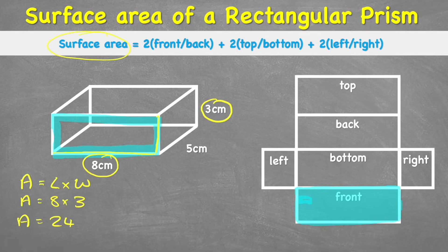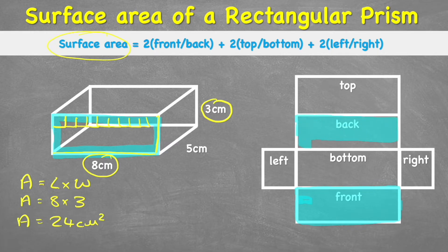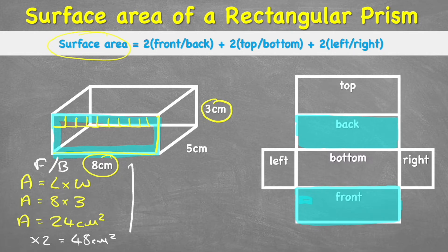Area equals 24 — but 24 what? When measuring area we are building up little squares to fill the shape, so we measure in centimeters squared. The front is 24 centimeters squared, and since the back is exactly the same, we multiply by two, giving us 48 centimeters squared for the front and back.